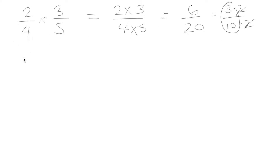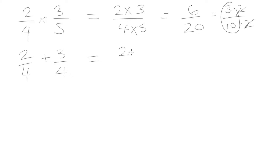Now let's say you had to calculate 2 quarters plus 3 quarters. When we're adding fractions, if we have the same denominator, we are simply going to add our numerators together and they are going to have that common denominator. So this is going to be 5 over 4.